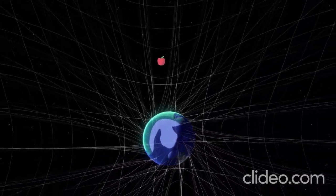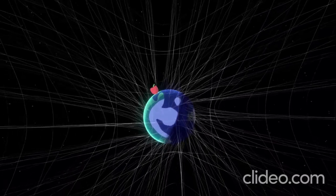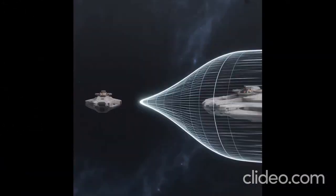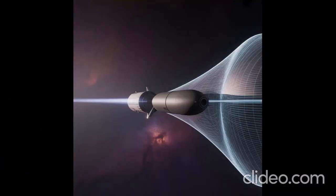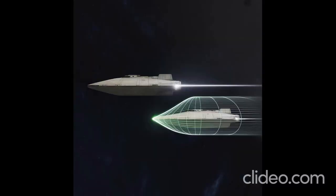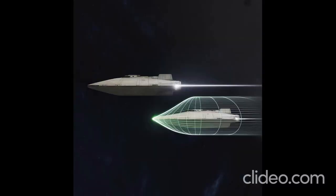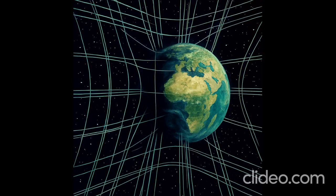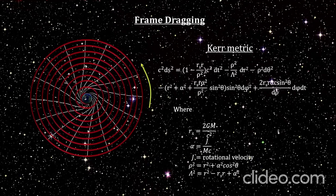As an object accelerates, its growing energy bends space-time ahead of it, shrinking its own length. This self-made barrier prevents it from tearing the fabric of space-time, making the speed of light unreachable.